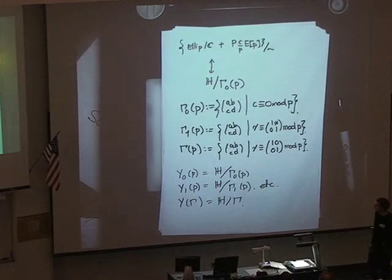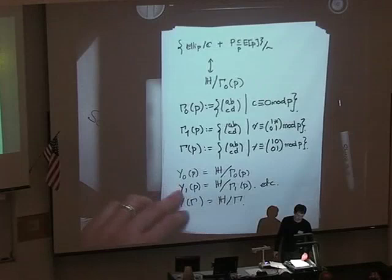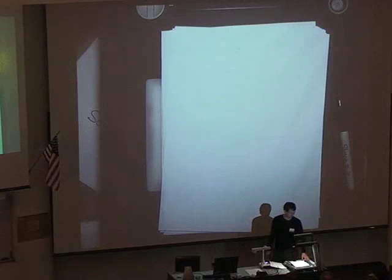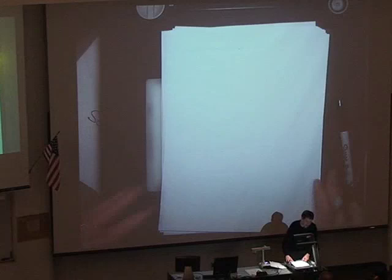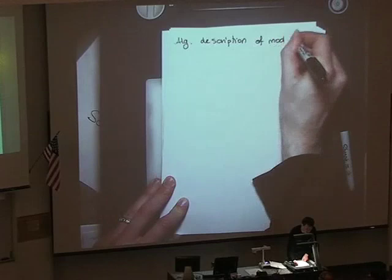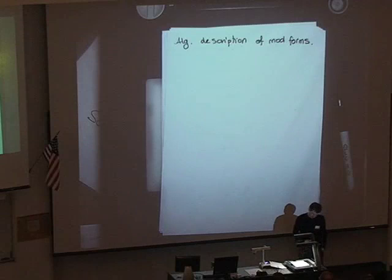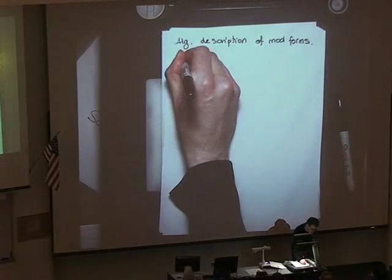We want to define not just modular forms of level one, but modular forms of all levels — of all levels Γ, some general Γ, a subgroup of SL₂(ℤ), more specifically a congruence subgroup. Now we want to think about what is an algebraic description of modular forms. Let's start with the special case k = 2, which might be familiar and is an easier case than the general one.